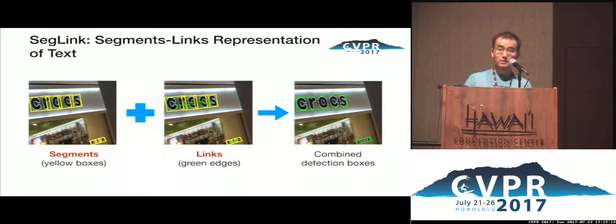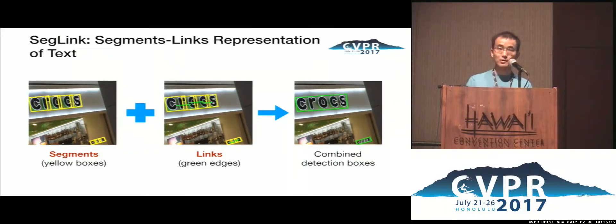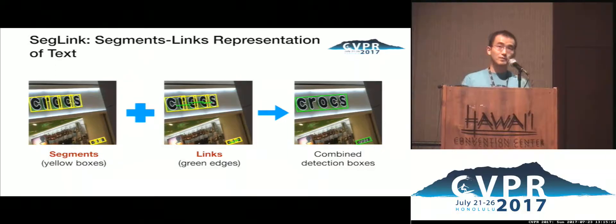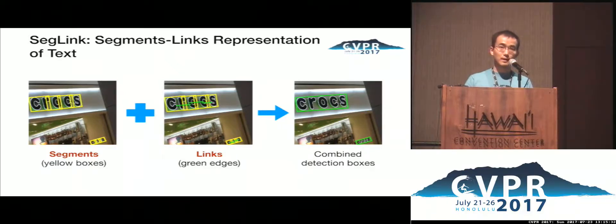Our method is called segment linking. The main idea is to decompose long text into smaller elements, namely segments and links. Segments are small pieces of text sliced from a whole word. A link connects a pair of segments and indicates that the two segments belong to the same word and should be combined.